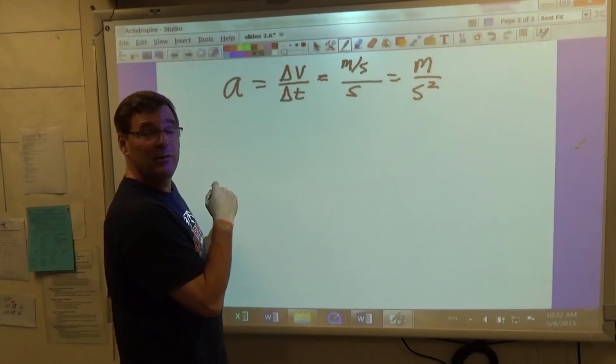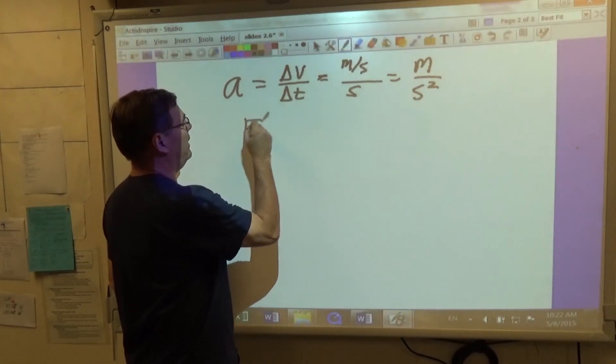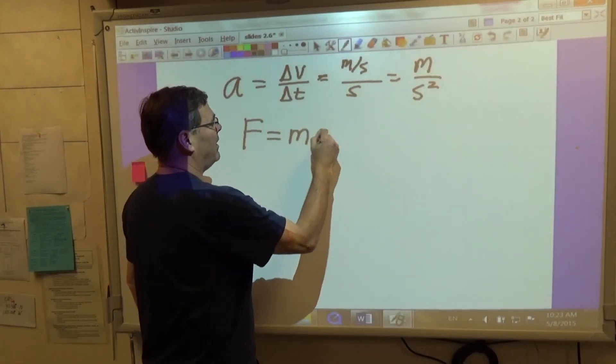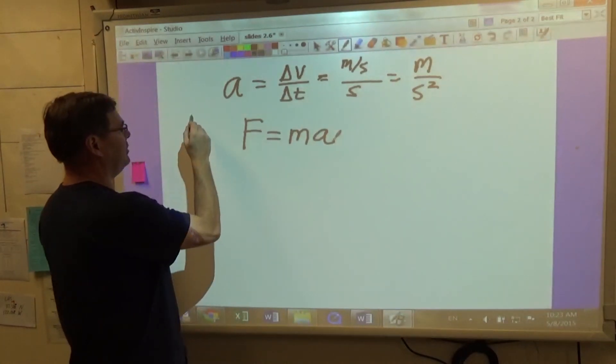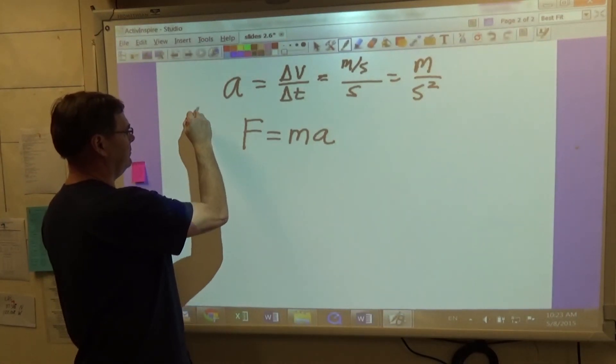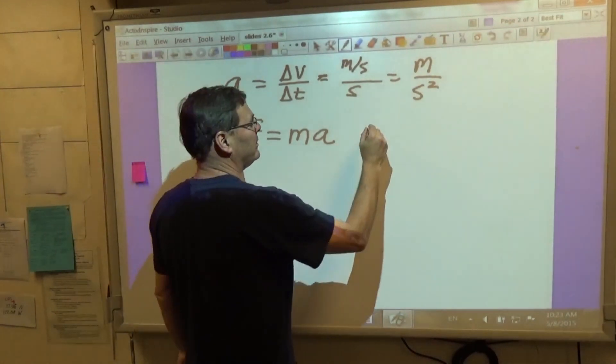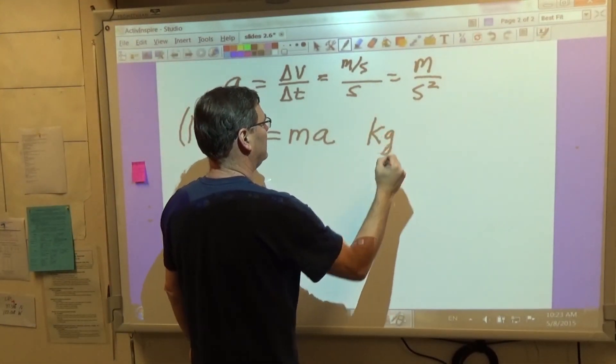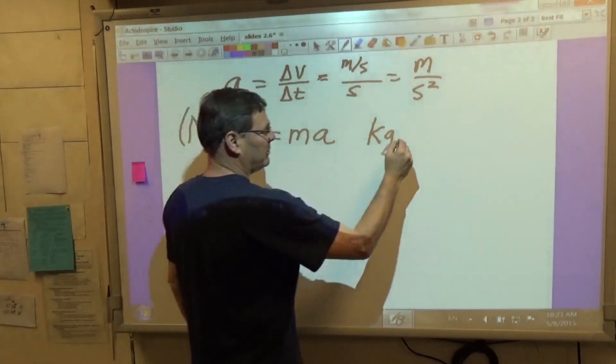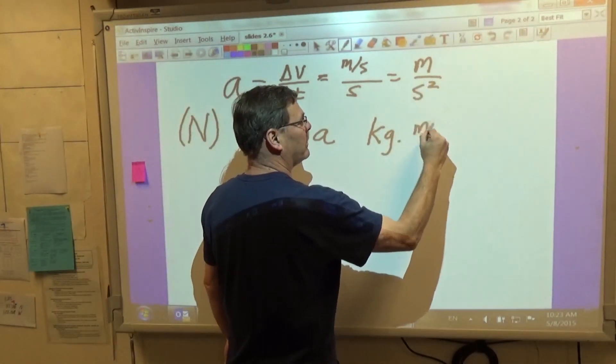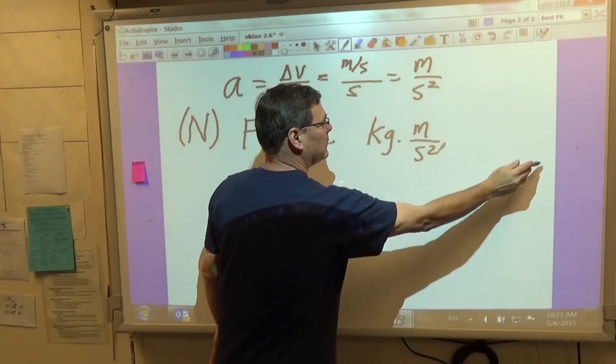Let's look at Newton's second law. F is equal to mass times acceleration. This is units of newtons. Force is units of newtons. Mass is kilograms times meters per second squared.